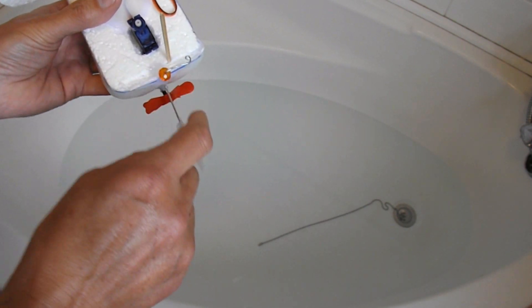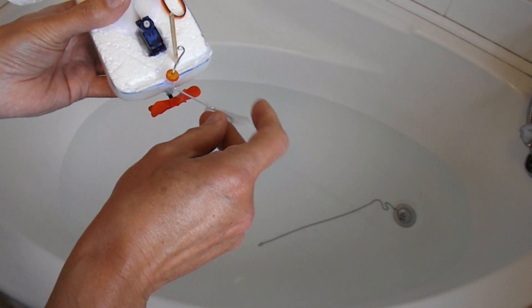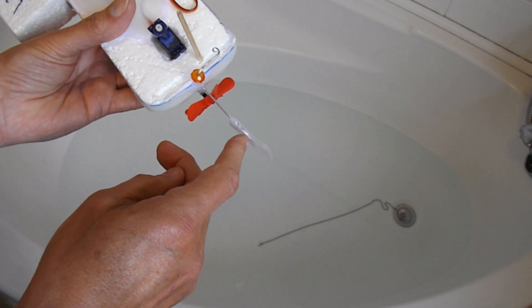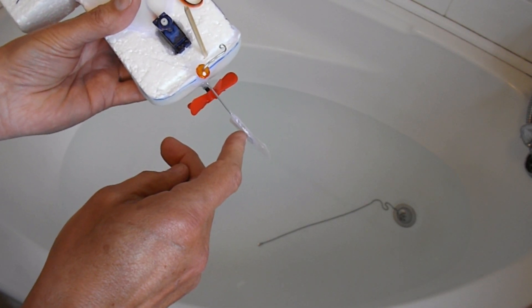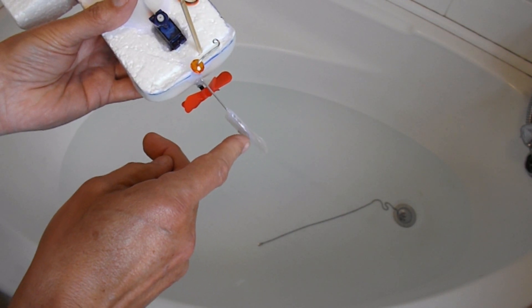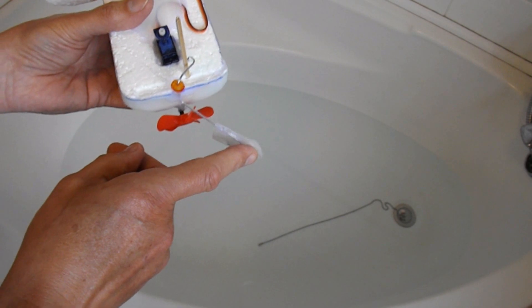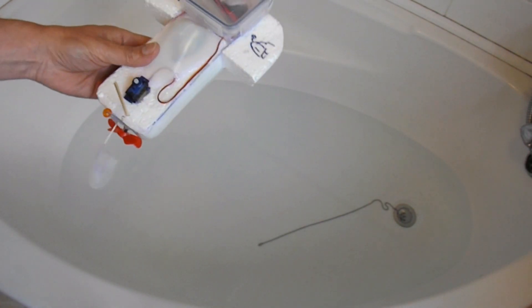Might need a second barbecue skewer to hold it in the straight position, but I'll just give it a try like that. So forwards it should more or less go straight. Backwards, the pressure of the water should push it round and the boat should steer. We'll give it a little try.